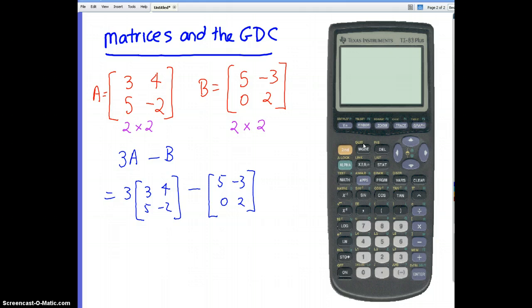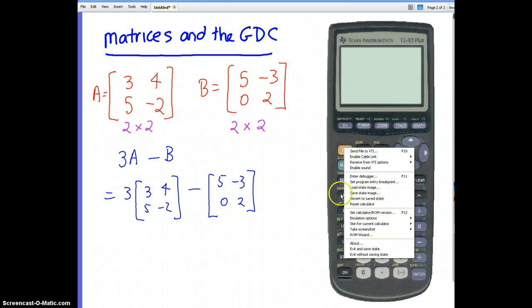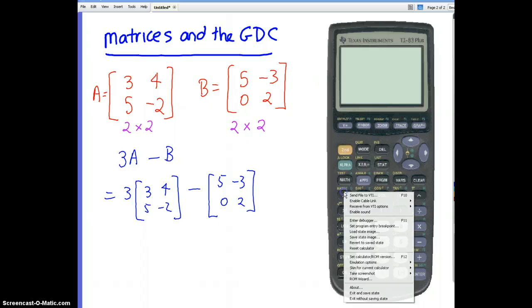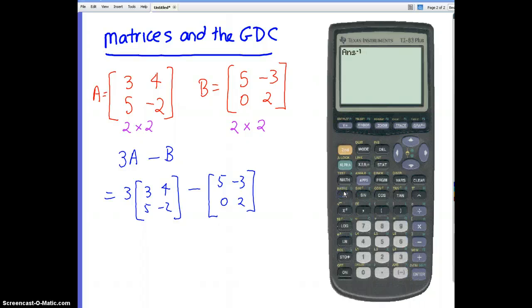So to do 3A minus B, I've got to just go back to my normal calculate screen. What I'm going to do now is literally type 3A minus B on here. So I go to second matrix. Let me clear that. Second matrix, now I'm just going to use the names.